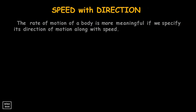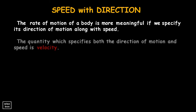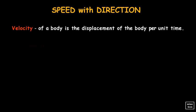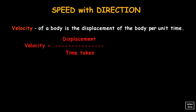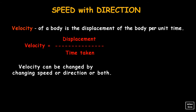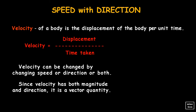The rate of motion of a body is more meaningful if we specify its direction of motion along with speed. The quantity which specifies both the direction of motion and speed is velocity. The velocity of a body is the displacement of the body per unit time. Since velocity has both magnitude and direction, it is a vector quantity.